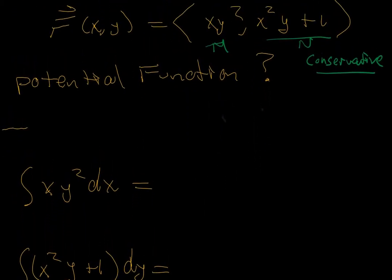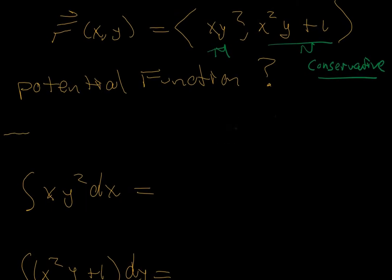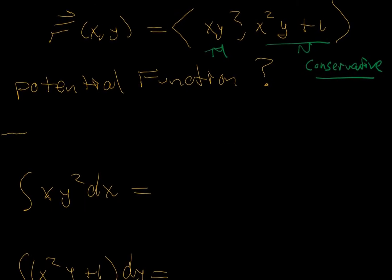So we're going to find the potential function of that vector field. And we did that by integrating the individual components. So the x component with respect to x, the antiderivative is going to be ½x²y², and then some constant, which could have anything with y in it, or numerical values, but no more x's.